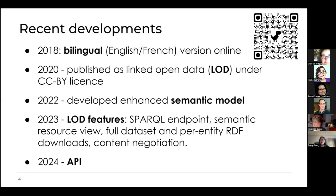Nomenclature has evolved considerably in recent years. Although originally available only in English, it's been fully bilingual English and French since the first online version was published in 2018. In 2020, it was published as linked open data under a Creative Commons attribution license, enabling users to download Excel files or RDF files in various serializations. In 2022, a more enhanced semantic model was developed. In 2023, a SPARQL endpoint and other linked data features were launched to enable easier integration with museum collections management systems. And as of 2024, an API is available.